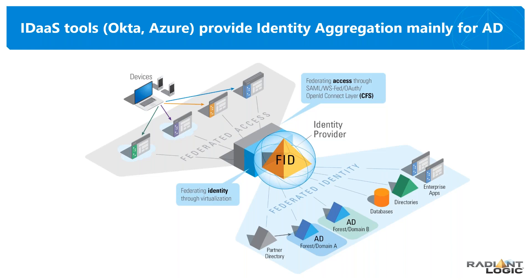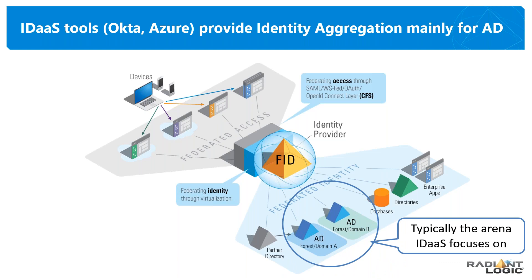I can build that information and create views of data that can be shared with my access management system for authentication and authorization. As I look at products taking identities into the cloud for Azure and Okta, they're primarily focused on your Active Directory environment. Microsoft's Azure is actually called Azure AD — its focus is that everyone should be in AD, and if everyone's in AD, you go to Azure and everything's fine. But there are challenges in governance, granular access, and zero trust that will require a lot more information and a much richer profile than just what's available in AD.